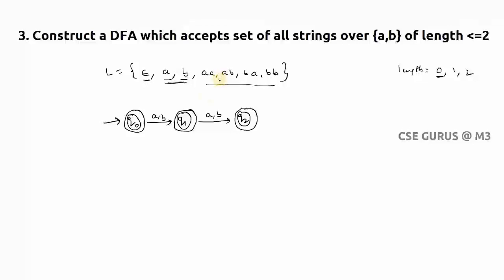So you can see for aa, from q0 it will take a as well as a, so then it goes to final state. Like this we need to do. If at most the length is less than or equal to three is asked, what you need to do?